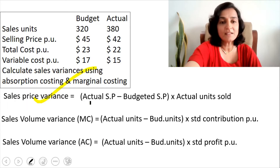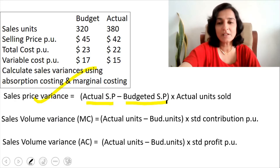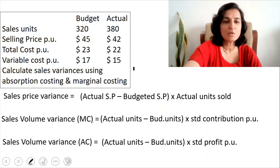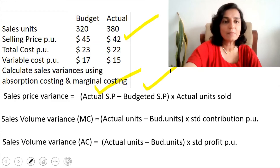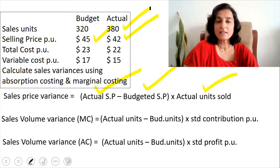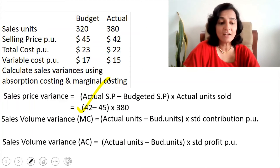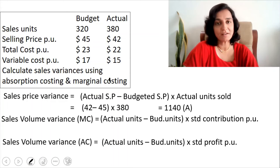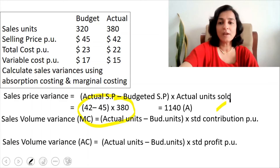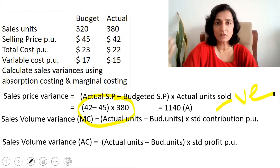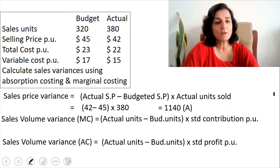For the sales price variance, the formula is actual selling price minus budgeted selling price, multiplied by actual units sold. The actual selling price is 42, the budgeted selling price is 45, and actual units sold is 380. Substituting: 42 minus 45, multiplied by 380, gives an adverse variance of 1,140. Since the actual selling price is less than budgeted, we have an adverse variance — a negative result means adverse.